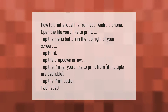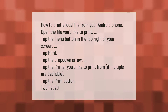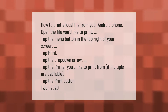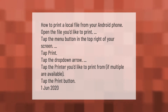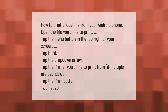How to print a local file from your Android phone. Open the file you'd like to print, tap the menu button in the top right of your screen, tap Print, tap the drop-down arrow, tap the printer you'd like to print from if multiple are available, then tap the Print button.